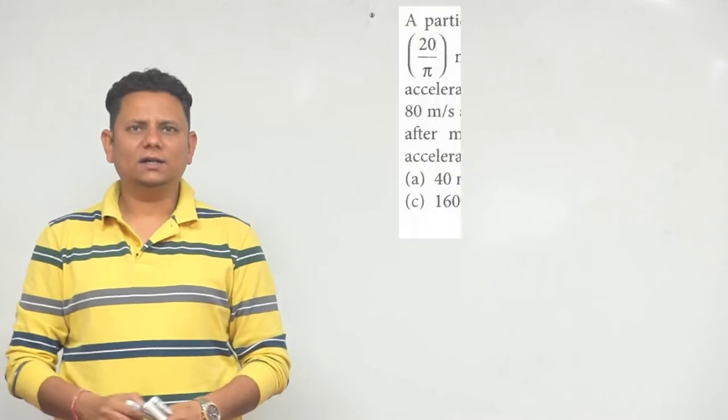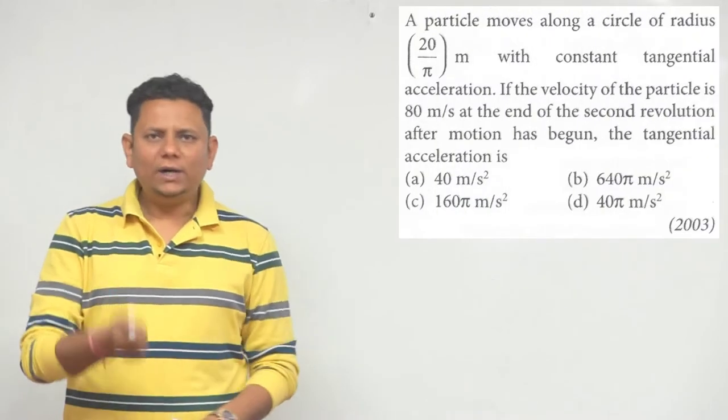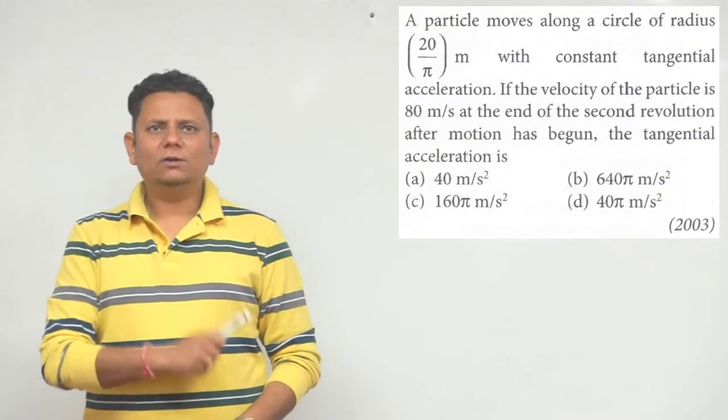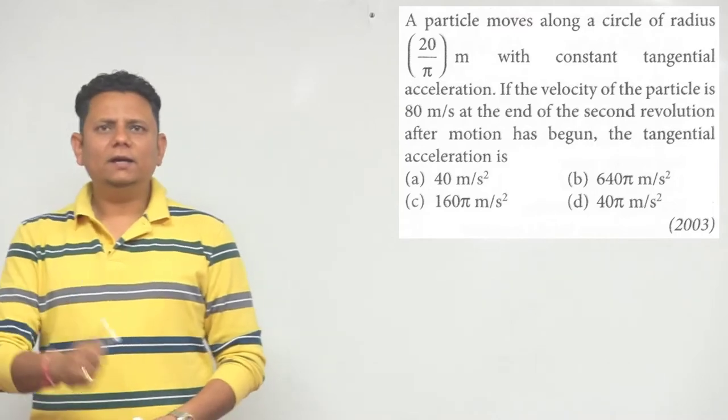Next question. The 23rd question says: a particle moves along a circle of radius 20/π meters with constant tangential acceleration. If the velocity of the particle is 80 m/s at the end of second revolution after motion has begun...